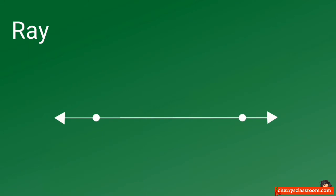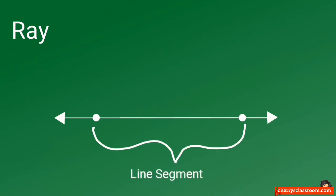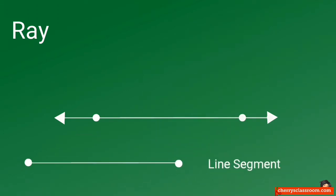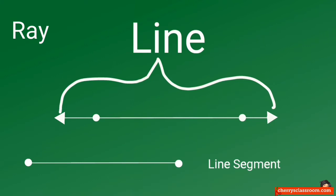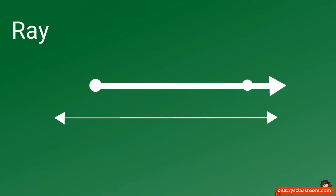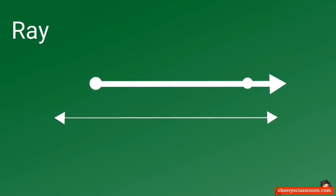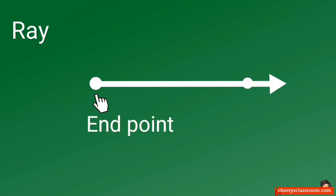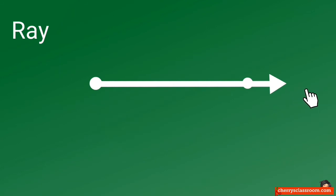How about a ray? A ray is also a portion of a line. But a ray has only one endpoint and extends in one direction.